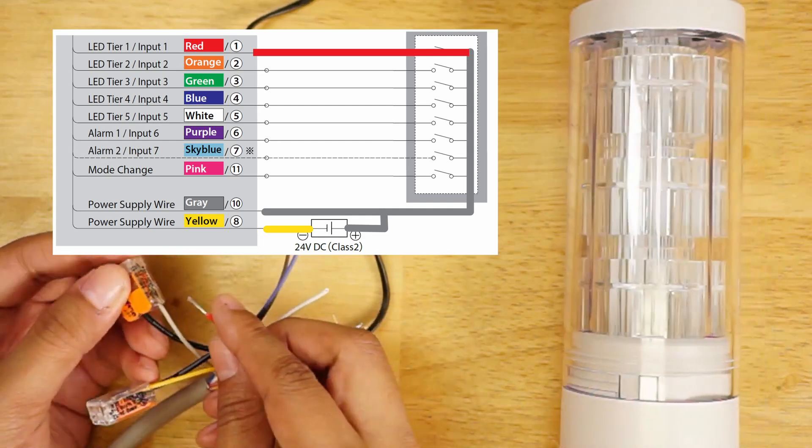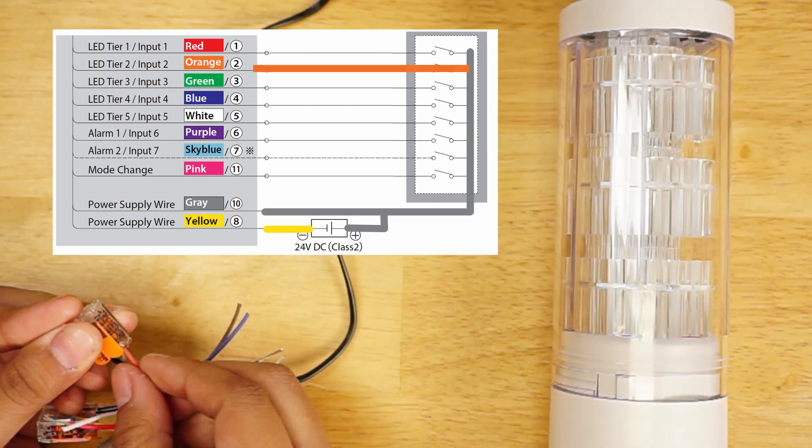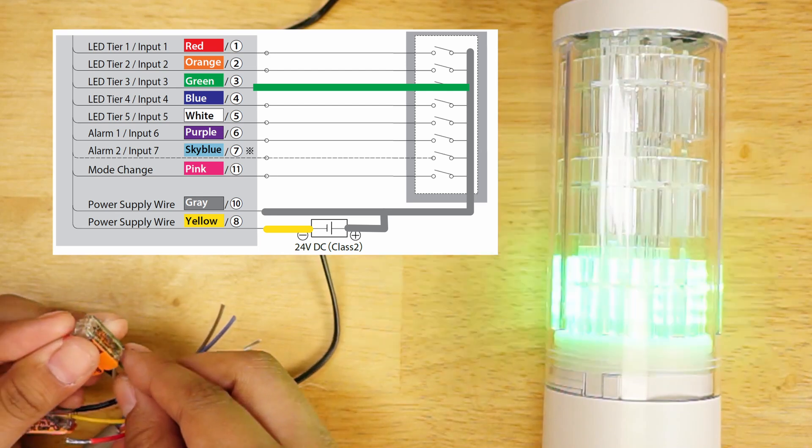Then we can take the red wire to turn on the top tier, the orange wire for the second tier, and the green wire for the bottom tier.